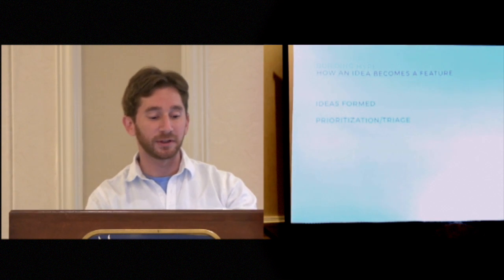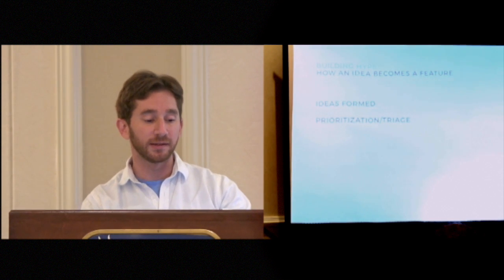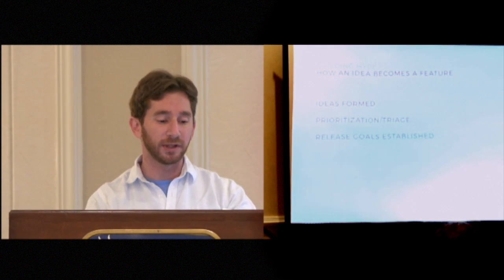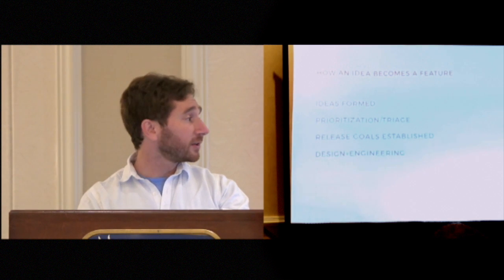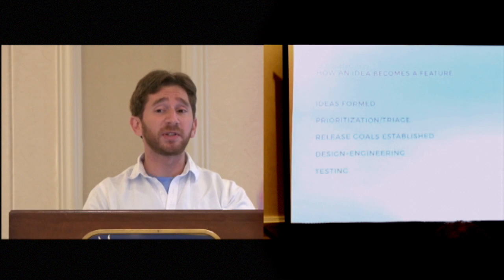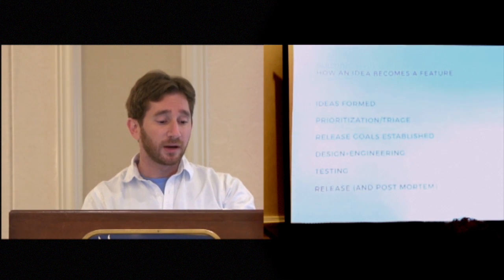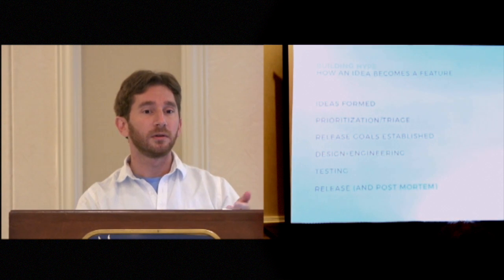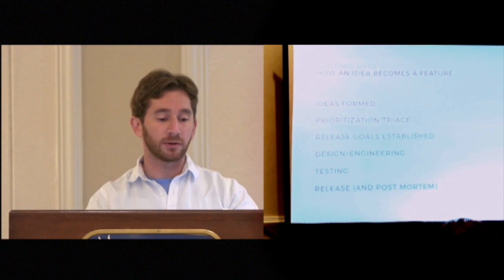It's fun to explain how an idea becomes a feature, because all those steps came from somewhere. The general flow is: ideas are formed from a variety of sources; we then prioritize and triage them, figuring out importance — an ongoing process we constantly revise. For any release, we establish what the goals are going to be. Then we do design and engineering, beta testing, and releasing. An important post-mortem question is: was the idea turned into the right feature? So it's a whole cycle.